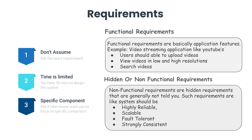Requirements can be of two types: functional and non-functional. Functional requirements are basically application features — what are you trying to build. For example, if we design a video streaming application like YouTube, then functional requirements can look like: users should be able to upload and watch videos, search videos, like, dislike, or add or view comments on videos. Non-functional requirements are hidden requirements that are generally not told to you. Such requirements are like a system should be highly reliable, very scalable, fault tolerant, and eventual or strongly consistent. These are non-functional but very important.